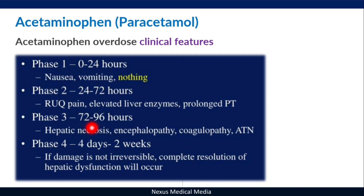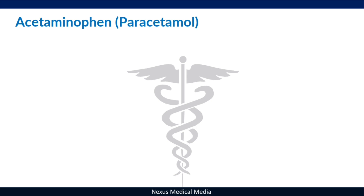Phase three (72–96 hours): the patient will have hepatic necrosis, encephalopathy, coagulopathy, and acute tubular necrosis. Phase four (four days to two weeks): this is the outcome phase. If the damage is not irreversible, there will be complete resolution of hepatic dysfunction. If the damage is irreversible, the outcome is death.